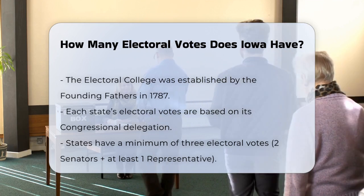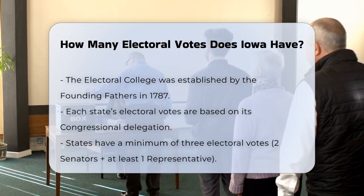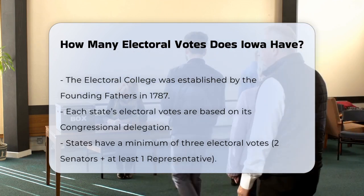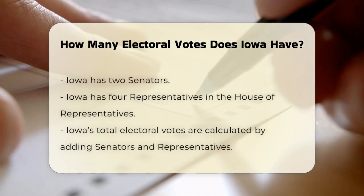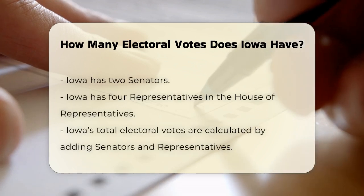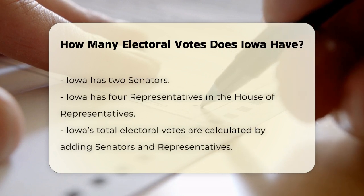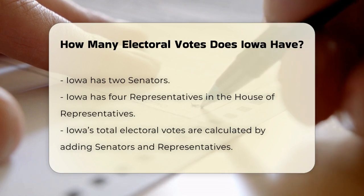Allocation of Electoral Votes: Each state is allocated electoral votes equal to the number of its senators and representatives in the U.S. congressional delegation. Since every state has two senators and the number of representatives is determined by the state's population according to the census, this method ensures that each state has a minimum of three electoral votes.